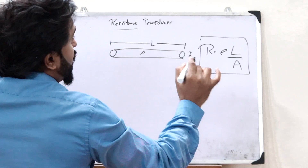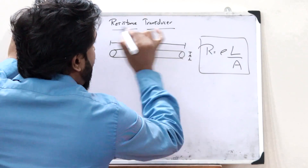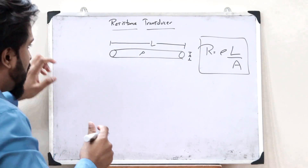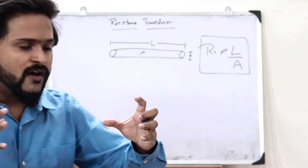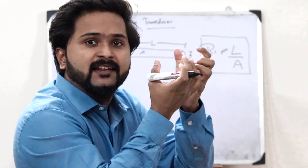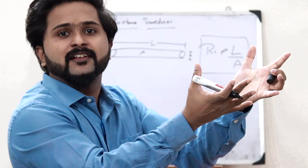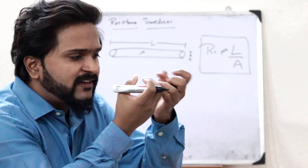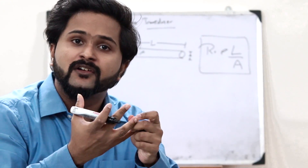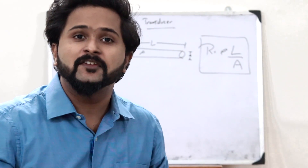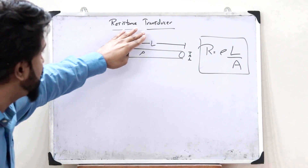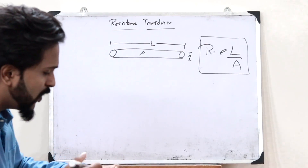Now we know for a fact that a transducer is a device that converts a physical quantity into an electric signal. This electric signal may be voltage, current, or even resistance. So here in the case of a resistance transducer,